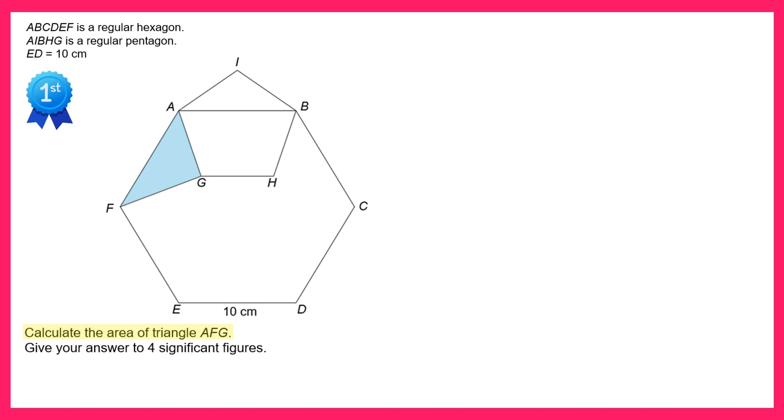In the question we're told we have a regular hexagon. Since it's regular, all of the sides must be the same length. We've been given the length ED at the bottom, so that must be the same as the length AB up here, so 10 centimeters.